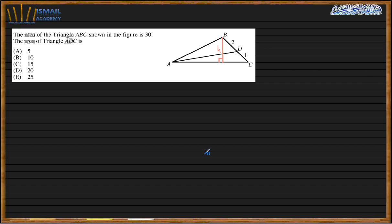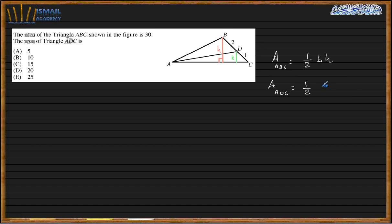The area of triangle ADC: we know that the area of triangle ABC is one-half base AC times h. For triangle ADC, they have the same base, but the height is not the same. Let me draw the height here and name it k. The area of triangle ADC is one-half times the same base times k, which is the height of triangle ADC.